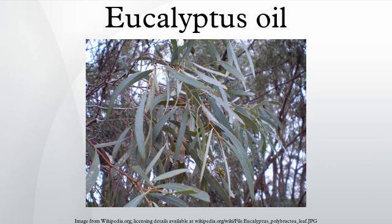Cineol-based eucalyptus oil is used as an insect repellent and biopesticide. In the US, eucalyptus oil was first registered in 1948 as an insecticide and miticide.